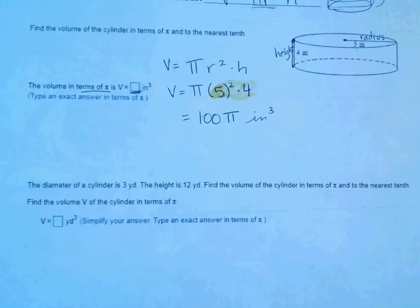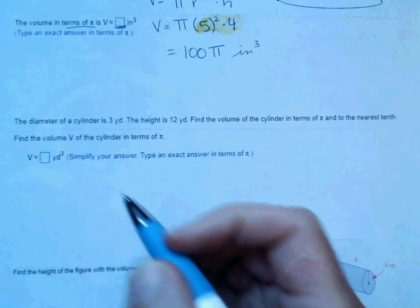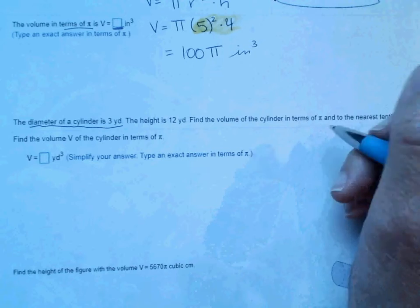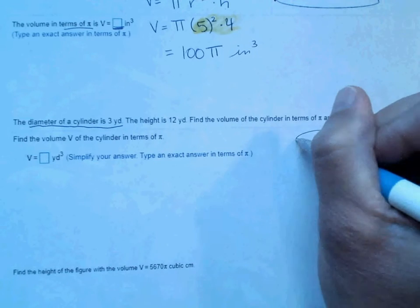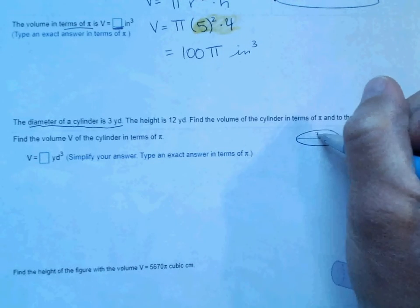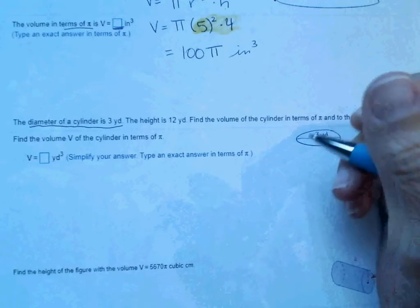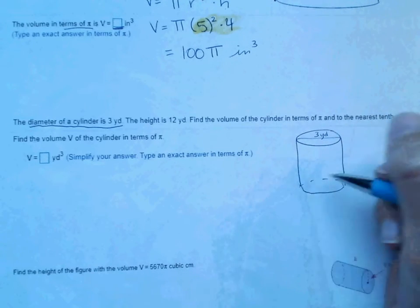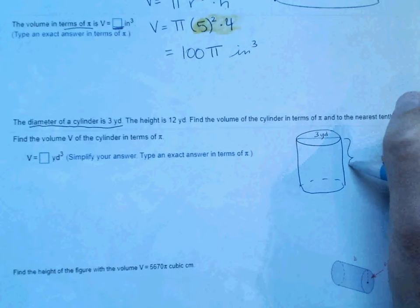Alright, the next example, it says the diameter of the cylinder is 3 yards. So in this case, all the way across the top is 3 yards. And the height, so draw your little half circle down here, the height is 12 yards.